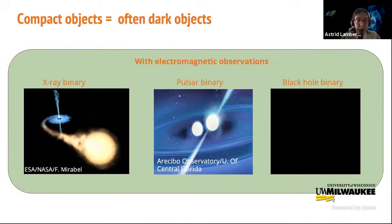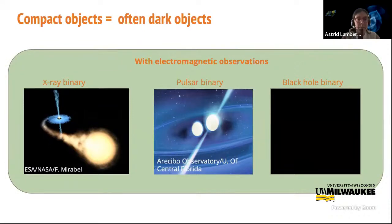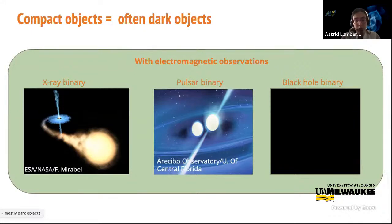Neutron stars are also faint, but we can observe them in certain cases. Some emit very beamed light, and as they rotate and the beam crosses the line of sight of Earth, we can detect the neutron star—in that case it's called a pulsar. We have found pulsars in neutron star binaries in our own Milky Way. The most famous is the Hulse-Taylor binary. After their discovery, Hulse and Taylor predicted the orbit's evolution using general relativity calculations. Radio observations for decades proved they were right, and they were awarded the Nobel Prize in Physics for effectively making the first indirect detection of gravitational waves.